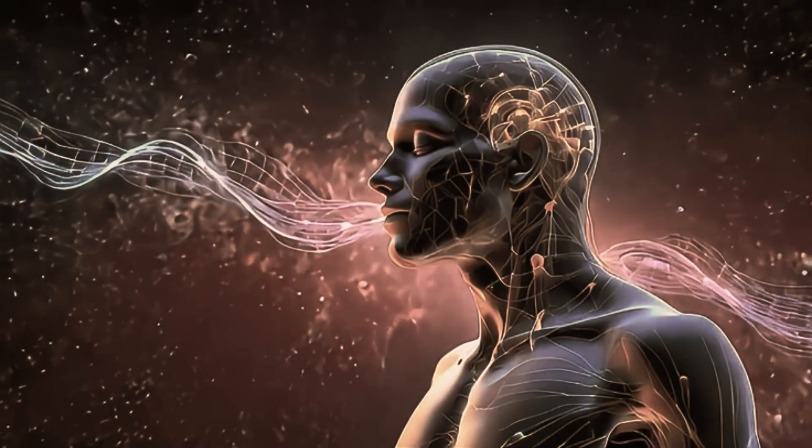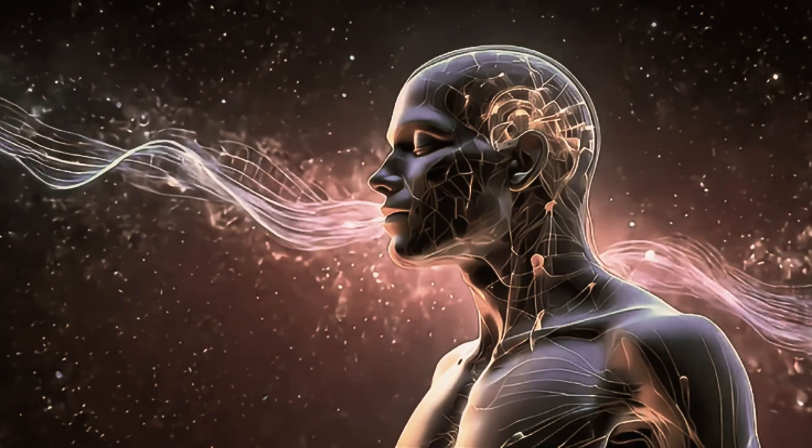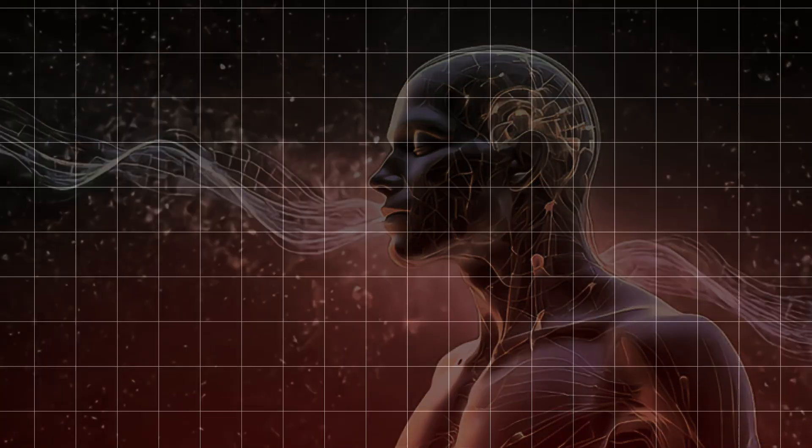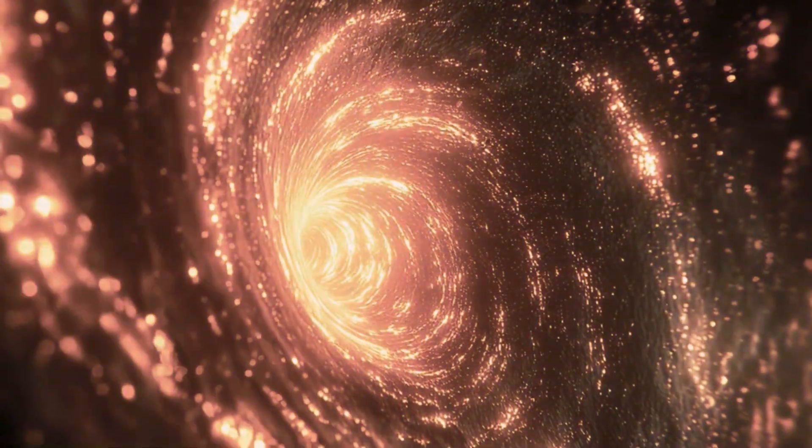Number 3: Non-locality. Quantum entanglement shows that two particles can affect each other across space instantly. The Upanishads say, the whole universe is pervaded by the same consciousness. In other words, everything is connected at a deeper level.